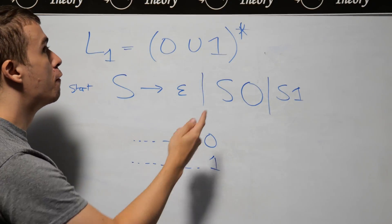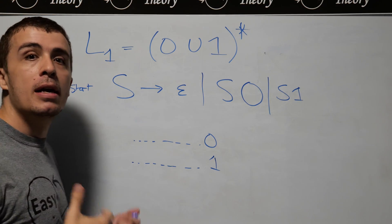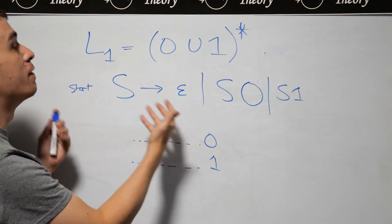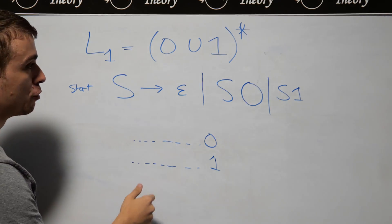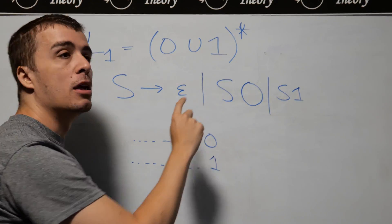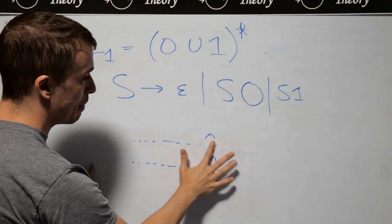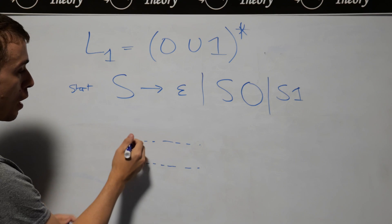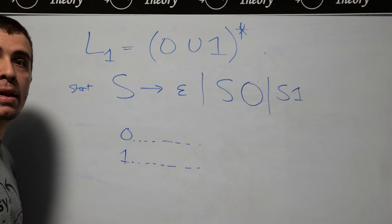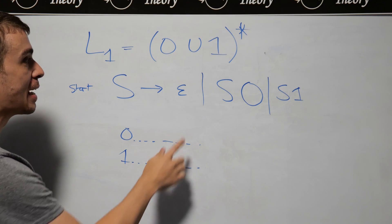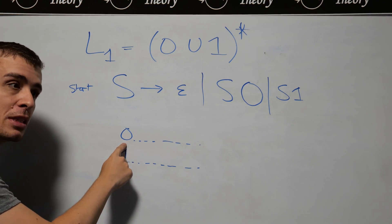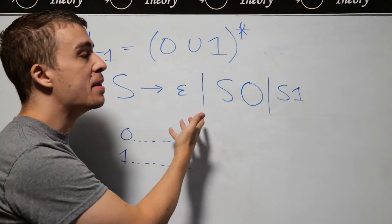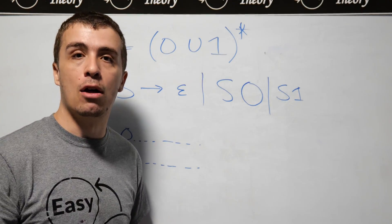This is a context-free grammar for this particular language. There are many other types of context-free grammars we could have made. We could have had some other variables, and we didn't have to put the zero on the end — we could have put it on the front — because the same logic applies. Every string is either the empty string, or it starts with a zero, or it starts with a one. So there are many different context-free grammars we can make, but this is one of them for L1.